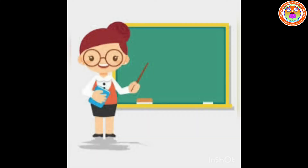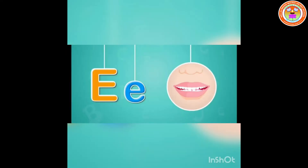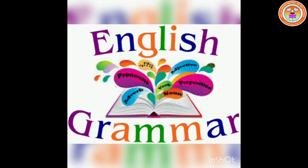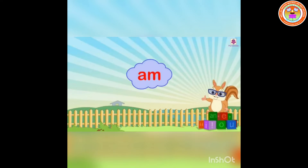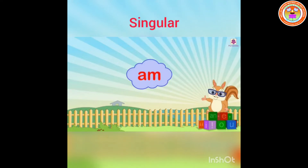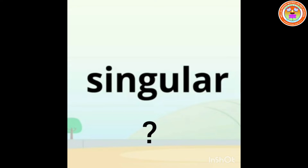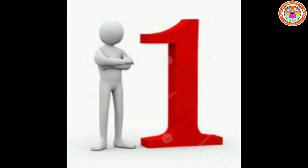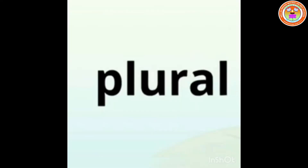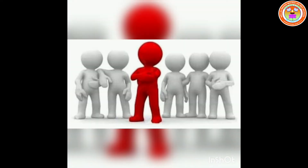Hello children, how are you all? I am Shanti ma'am. In our last section we learnt about e-sound words and how to read. In this section we will learn about some grammar: 'am' and 'are'. Children, we use 'am' for a singular word and 'are' for a plural word. Singular is when we say about one person, and plural is when we talk about more than one.